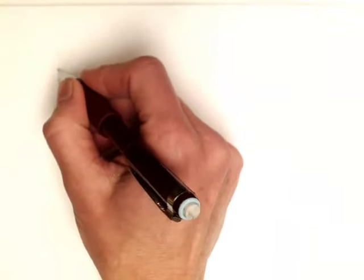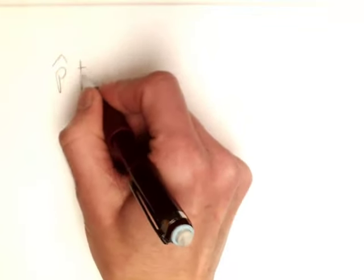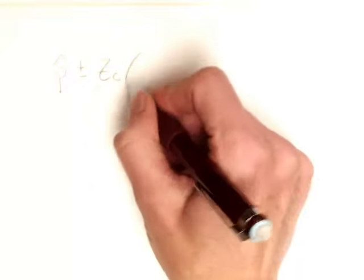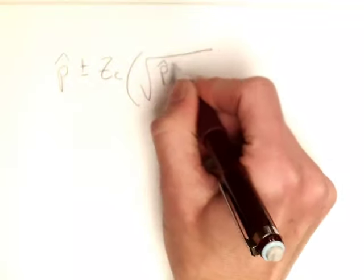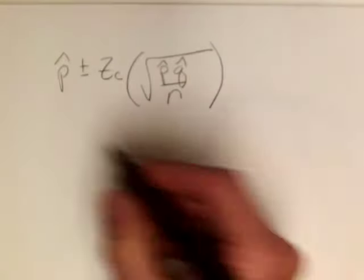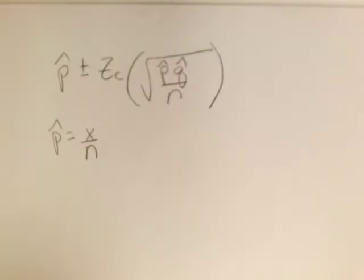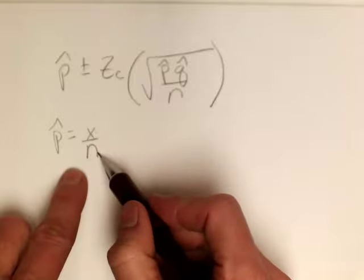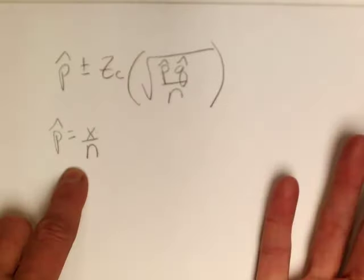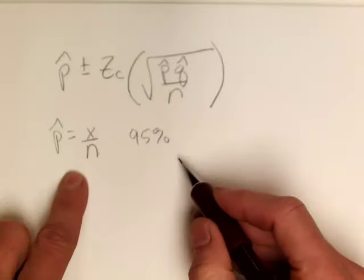So for confidence interval for proportion, it's p-hat plus or minus z sub c times the square root of p-hat times q-hat over n, where p-hat is the number of successes out of n trials. So for your calculator, you need x and n, and you also need your level of confidence.